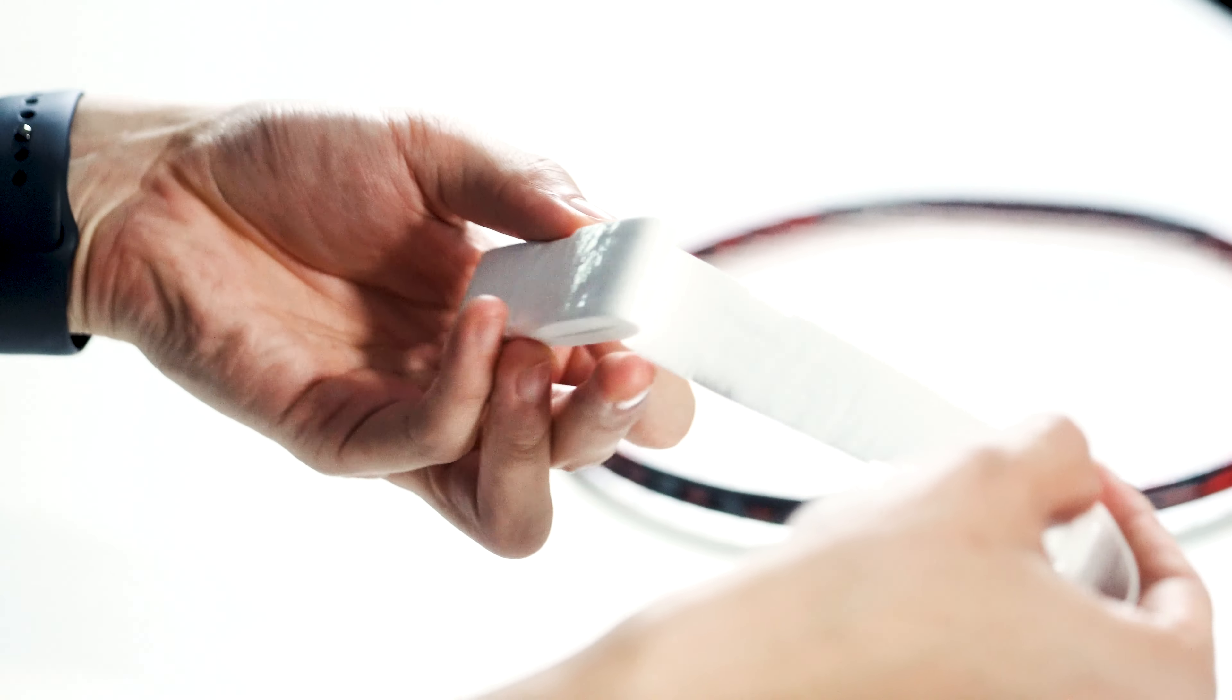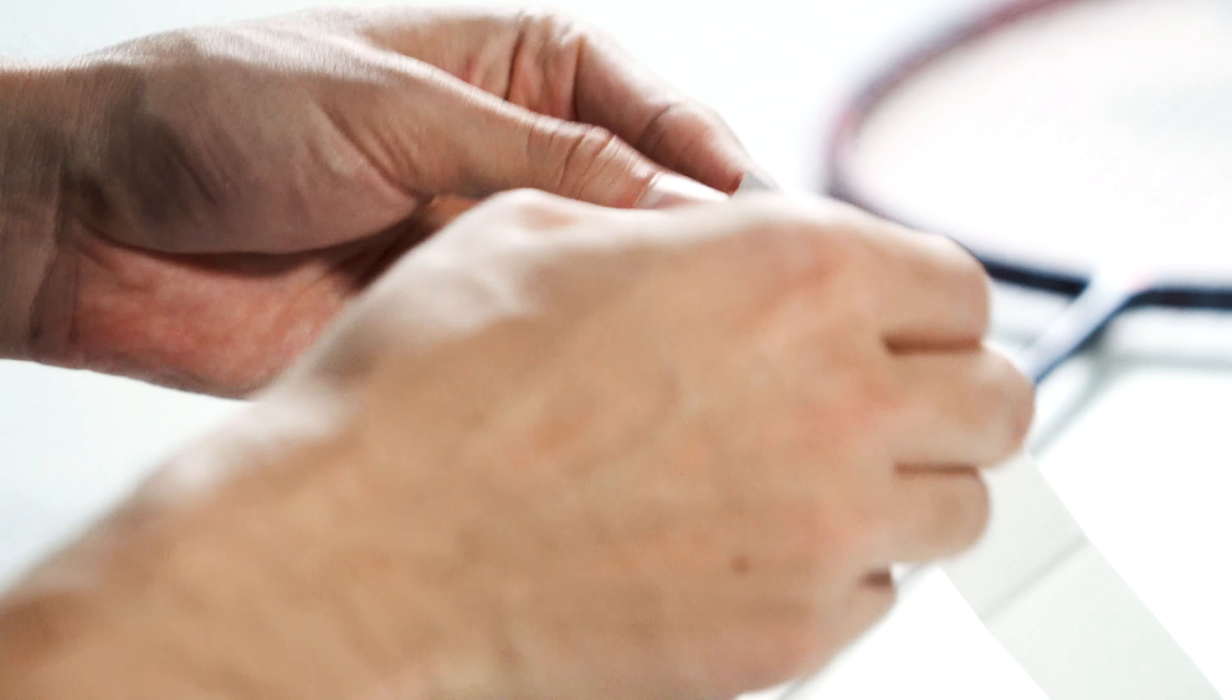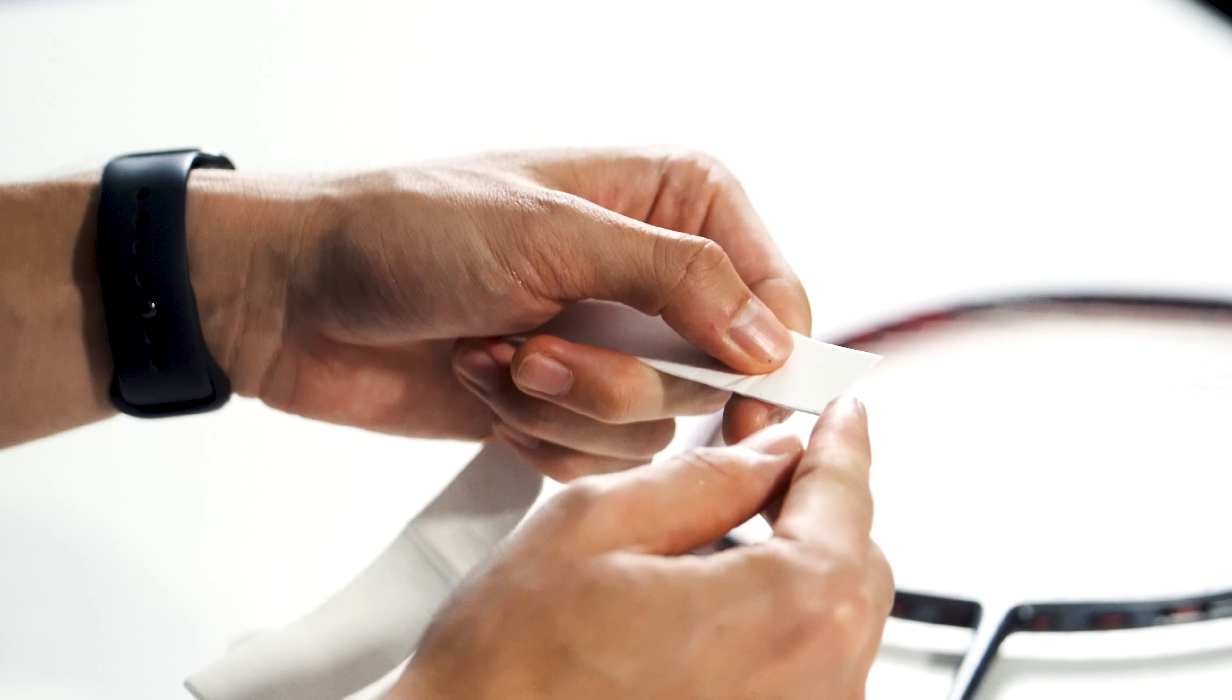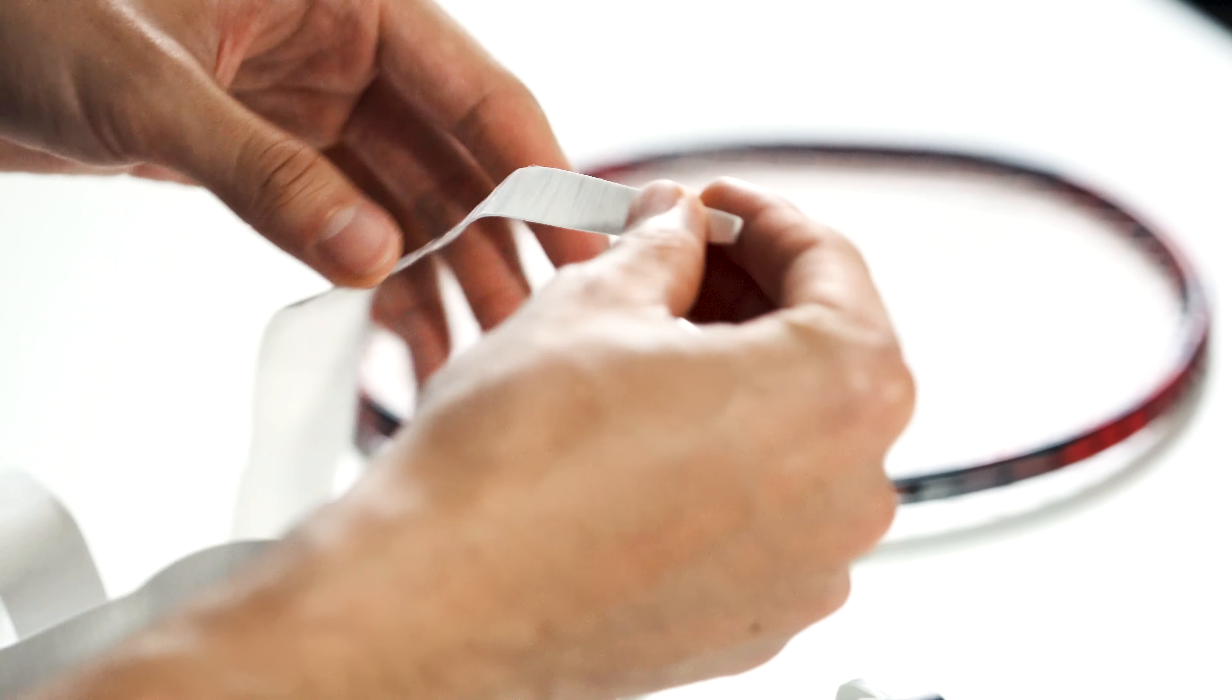The first thing you'll notice as you unravel the grip is that there's this plastic backing on top of the grip and we're going to need to peel this off later. The grip has two ends - one end is flat and the other end is tapered with an adhesive at the end.